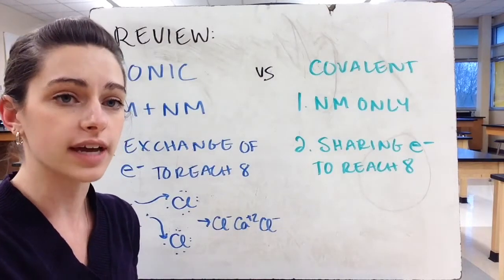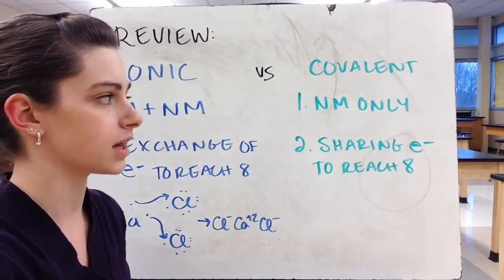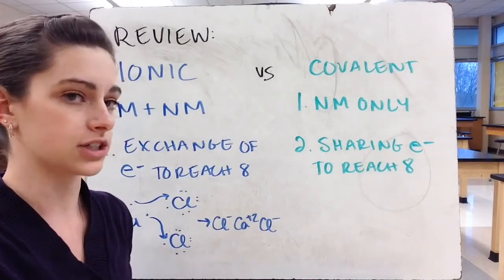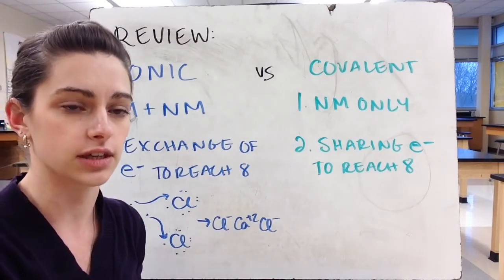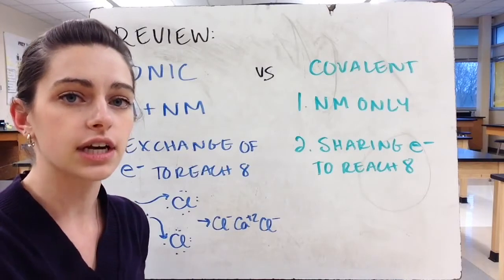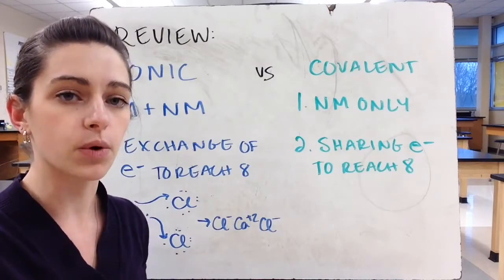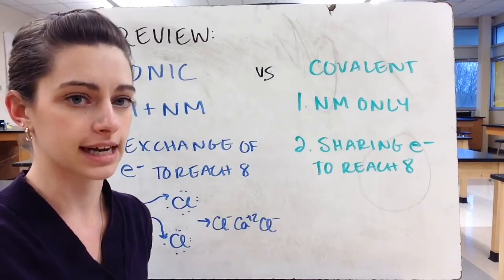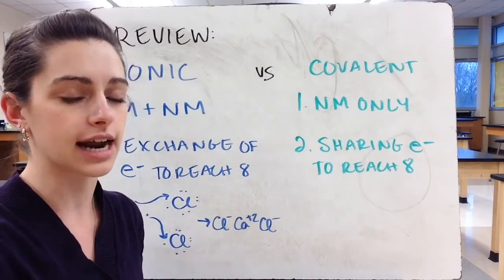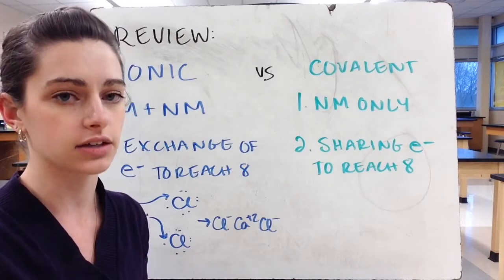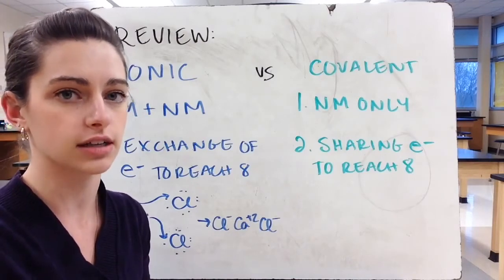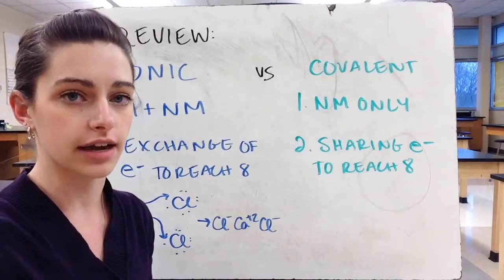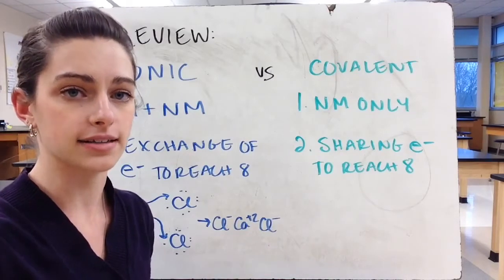With a covalent molecule, covalent molecules are made of only non-metals. When they need to reach eight valence electrons to reach their octet, they're going to share their electrons. We're pooling all of the electrons together and then dividing them up so that everybody can have eight. When that happens, they end up sharing electrons, and those shared electrons are called bonds.